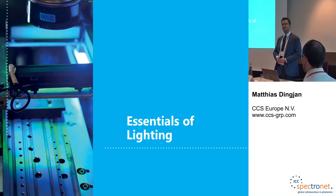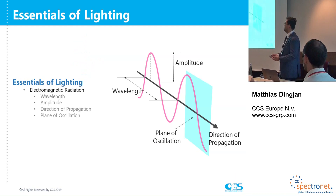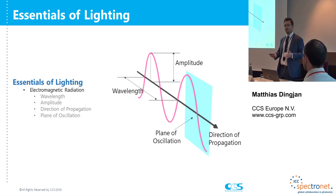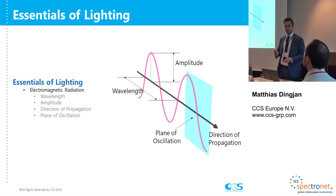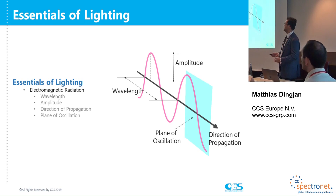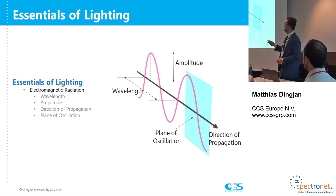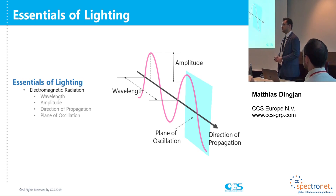Before we start we have to go into the essentials of lighting. First, what is light? Lighting is in essence electromagnetic radiation. What we view as visible light is between a bandwidth of 400 nanometers up to 700 nanometers, and light is composed out of four different components. The first one is wavelength — the distance until a wave starts to repeat itself. That wavelength defines what color we perceive: somewhere in the 400s is more blue, 660 is red, and somewhere in the middle we perceive as green.